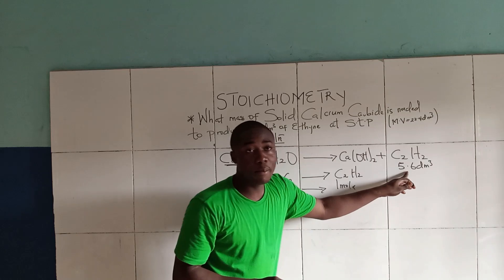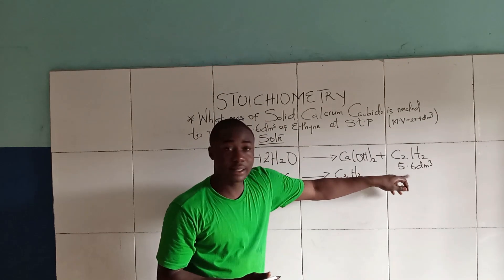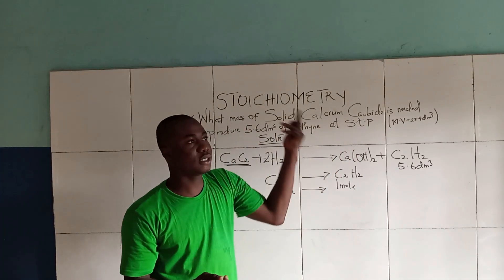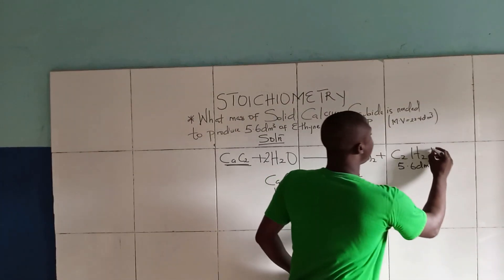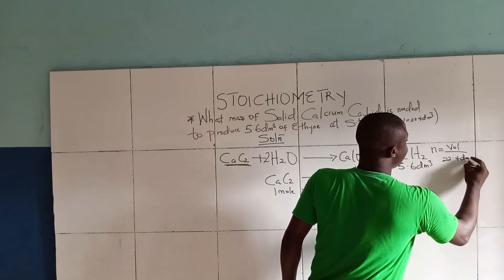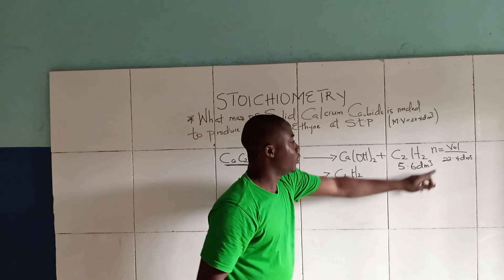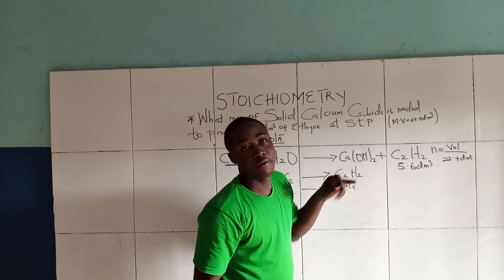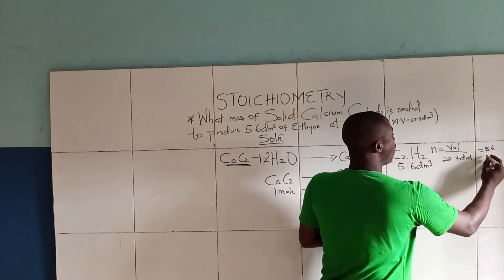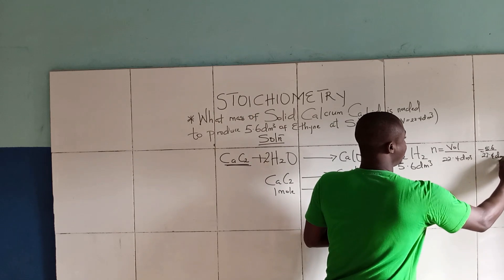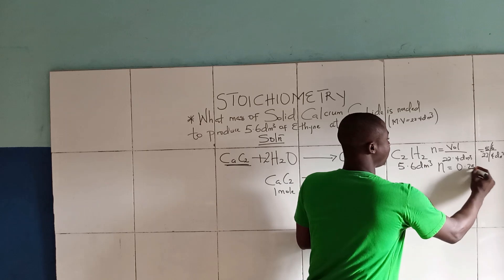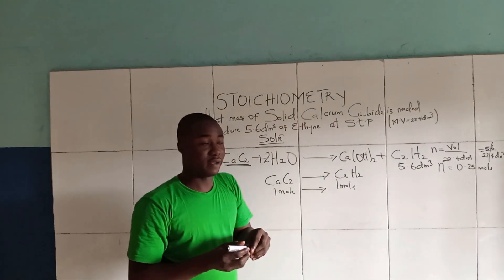We are going to find the number of moles of acetylene using the given volume. At STP, the number of moles equals volume divided by 22.4 dm³. The volume of acetylene is given as 5.6 dm³, so we calculate 5.6 ÷ 22.4. The number of moles of acetylene becomes 0.25 moles.